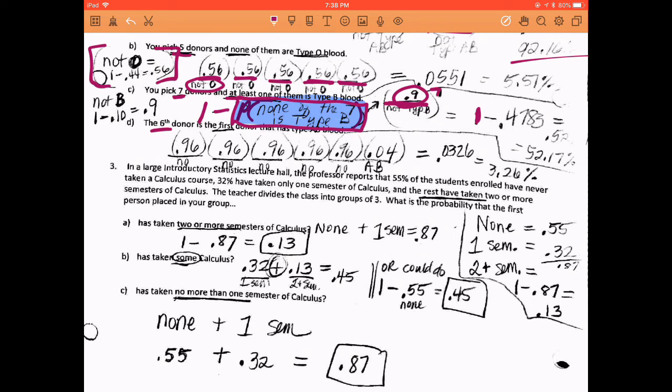So not type B. I had to look up there to remember that type B is that 10%. So since type B is 10%, everything else is 90%. And I want none of those seven, so that's 0.9 to the seventh power. That's how I get that section there. 1 minus that 0.4783 is 52.17%. And the last one identifies the specific order, saying that the sixth one is the type AB. So first, second, third, fourth, and fifth are the not AB, and the sixth one is that 0.04. So you multiply that. You want the first and the second and the third and the fourth and the fifth all to be the 0.96, and the sixth one is your 0.04. That makes 3.26%.